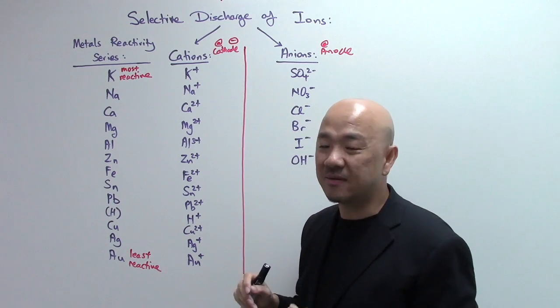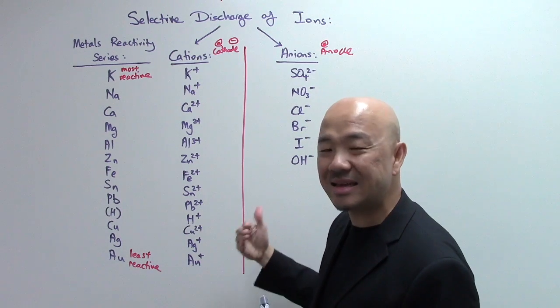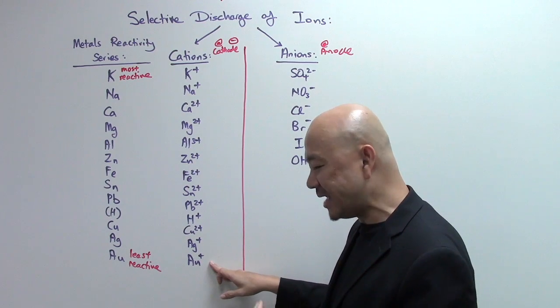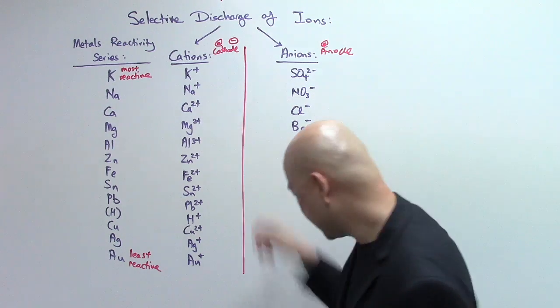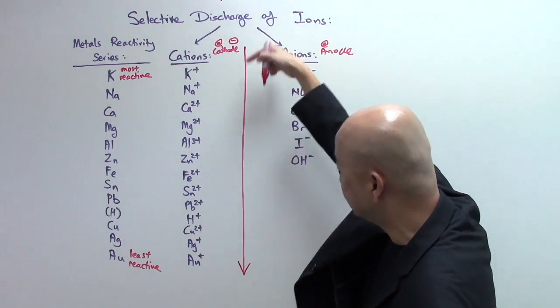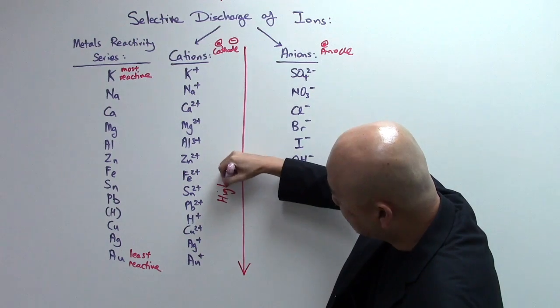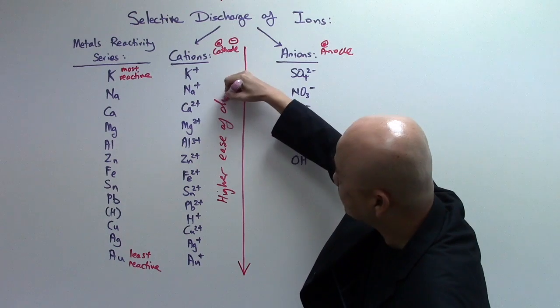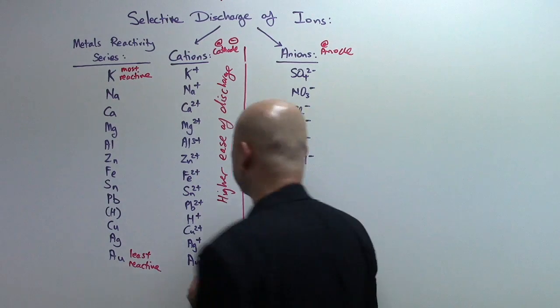Again, don't use the word reactive. Instead, we tend to use the word has a higher ease of discharge. So gold ion has a higher ease of discharge than your potassium ion. So right here, this will be an arrow down. As you go down the cations, the one at the bottom will have the highest ease of discharge.